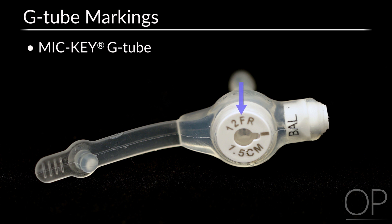This is a 12 French G-tube, and it is 1.5 centimeters in length. The letters B-A-L indicate the balloon port. However, the balloon volume does not appear on the external base.